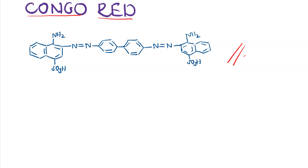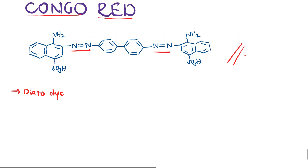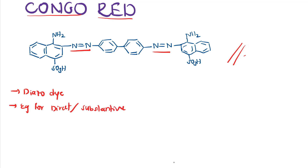Congo red is a member of diazo dyes. It is called a diazo dye because it contains the chromophore N=N (azo group). Congo red is also a good example of a direct dye, which is also called a substantive dye.